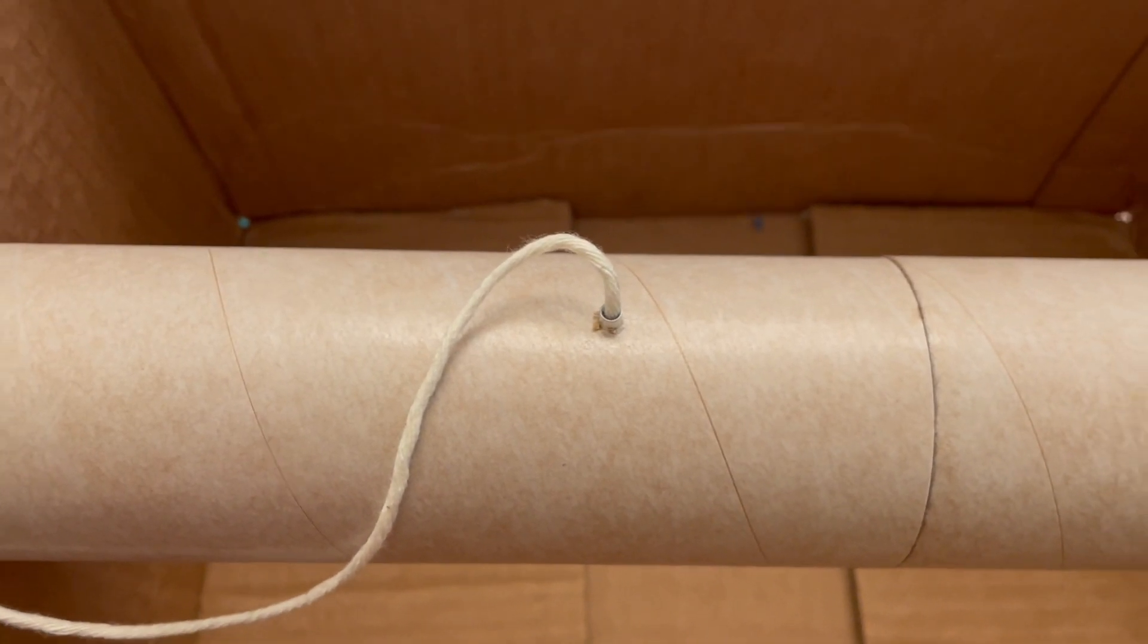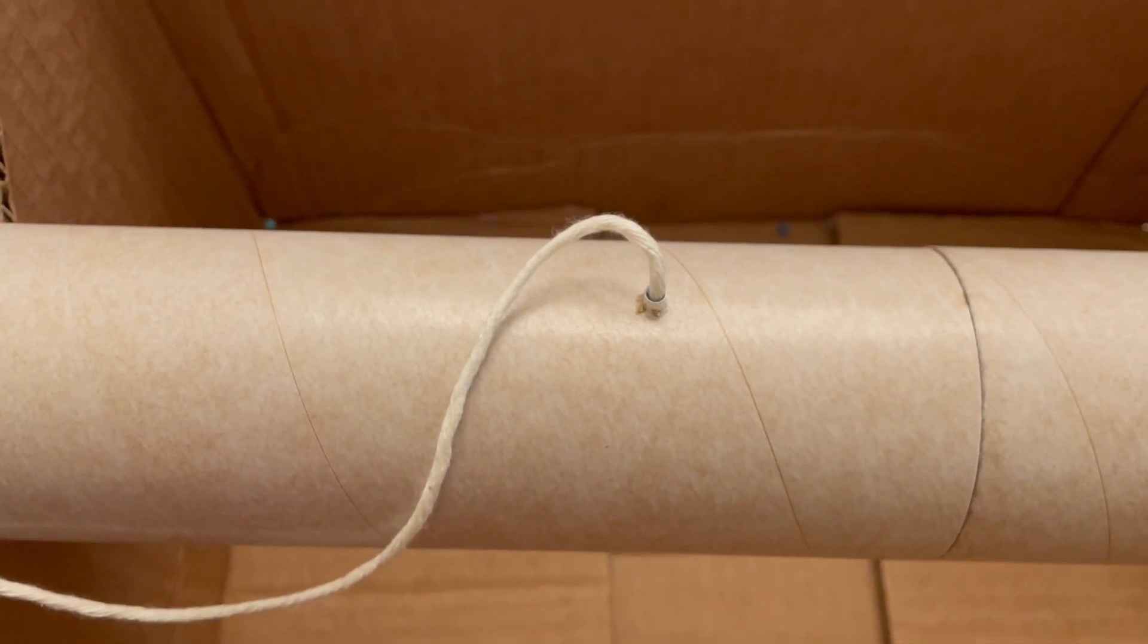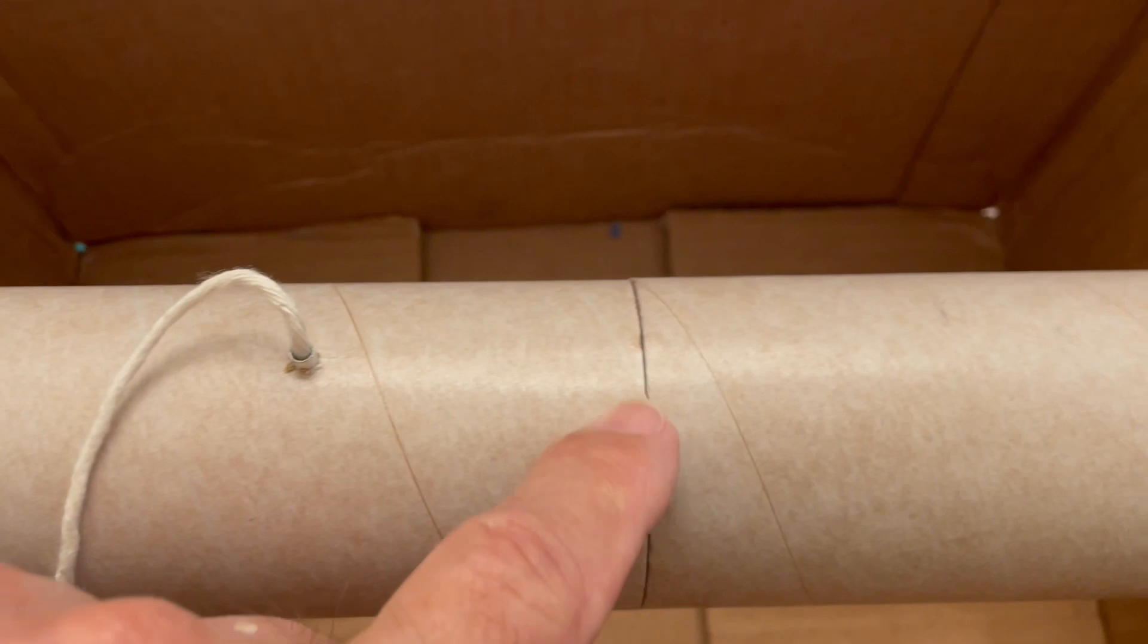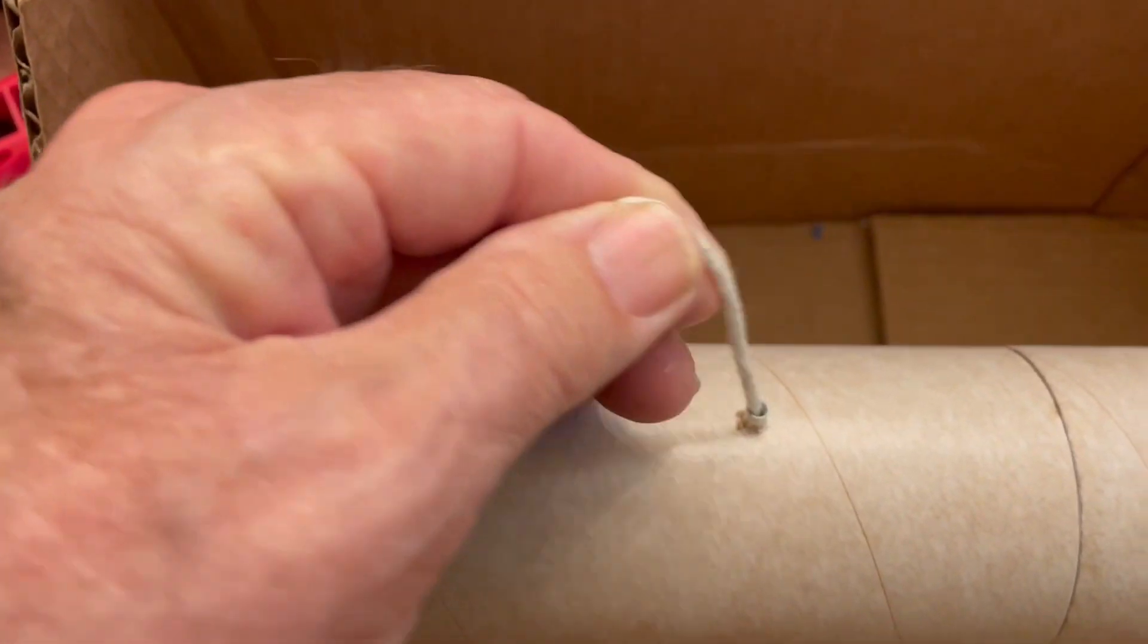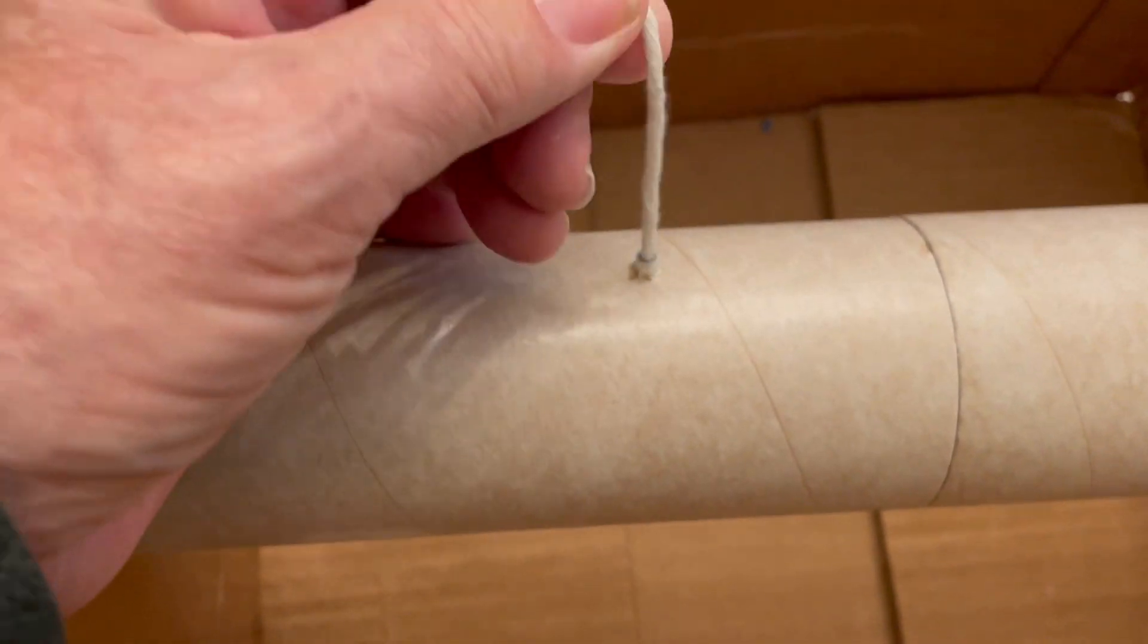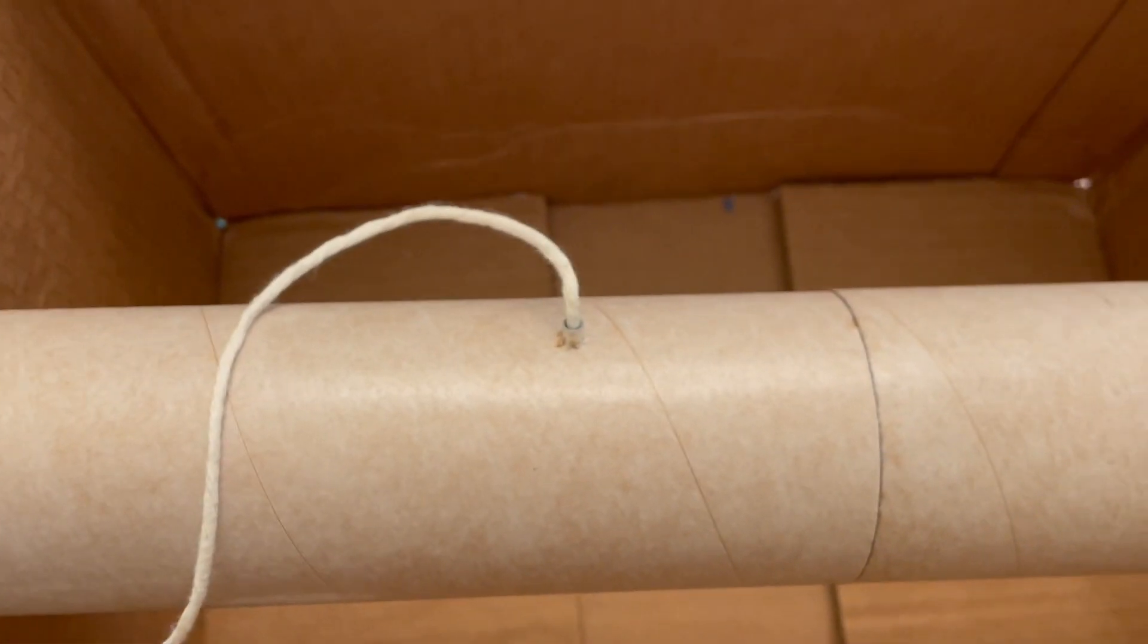So if you make a mistake like I did and don't put your rail button in when your tubes are apart so you can reach in there, you can use a string, the string trick, and just put a knot on the back end of the rail button mount and pull it into place with a string. That'll work.